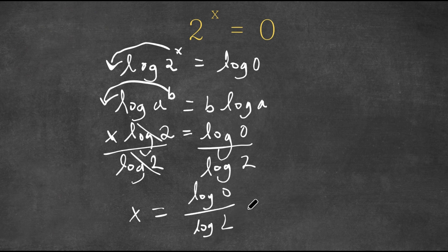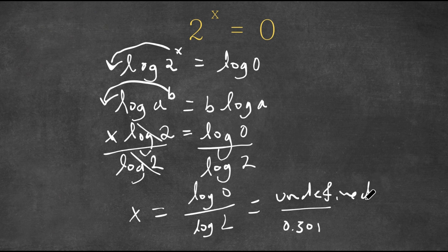However, for log 0 over log 2, first log 2 equals 0.301, but log 0 is actually undefined.